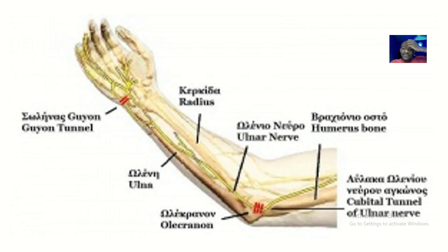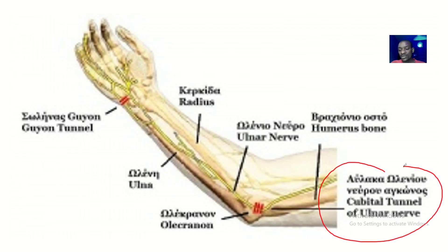We'll see from here — the picture is quite not clear, but you guys could still learn. You can see the cubital tunnel injury, which is the injury at the elbow, and this is the injury at the wrist.